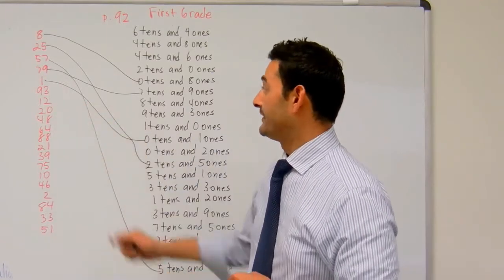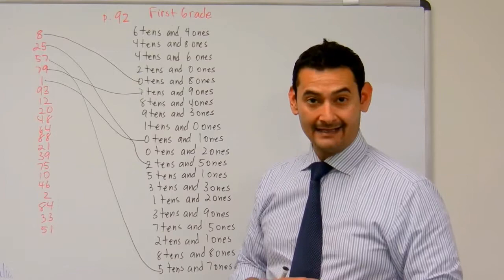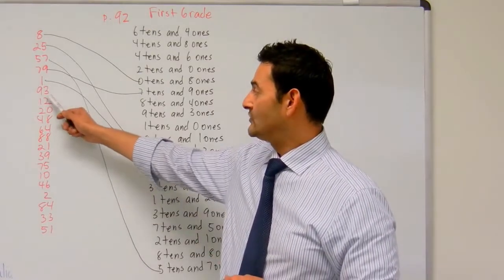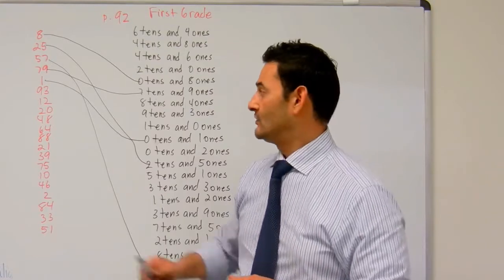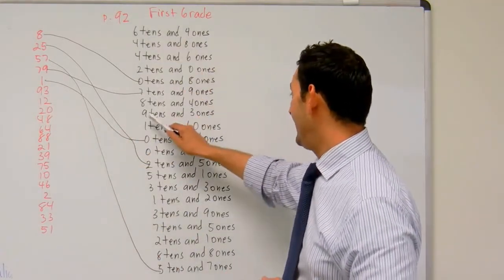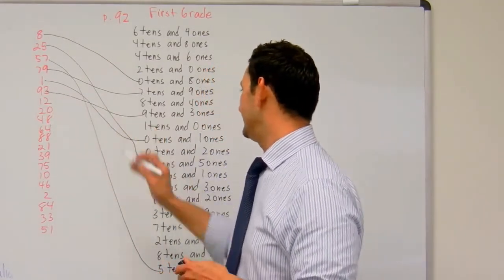And finally, let's take a look at number 93. How many bundles of ten do I have in 93? I've got nine. That's correct. How many ones do I have in the number 93? I've got three. So I've got nine tens and three ones. Let's try to find that. Nine tens, three ones, there it is. I'm going to connect it there.